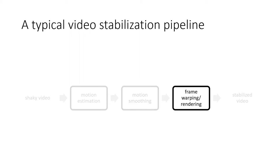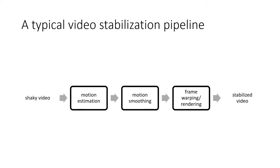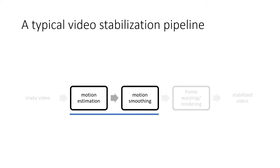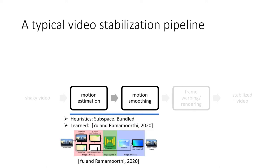Third, the stable frame generation step uses the predicted spatial transform to synthesize the stabilized video. Most video stabilization methods focus on estimating motion between frames and smoothing the motion. These can be done by heuristic methods like smoothing warping grids or learned ones by CNNs.